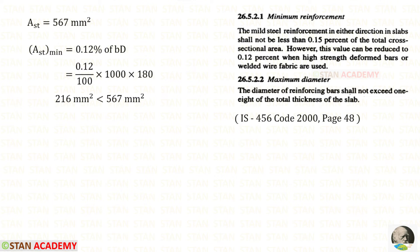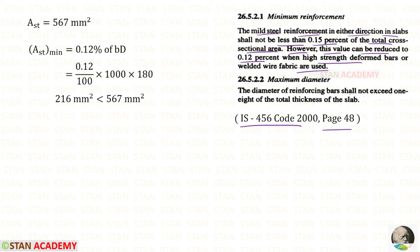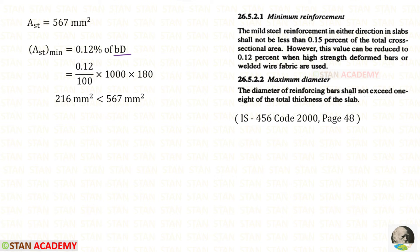Now we check whether the area is enough. From IS 456 page number 48, for high strength deformed bars like Fe 415 the minimum reinforcement is 0.12 percent of the total cross sectional area. The cross sectional area is B times D, keeping breadth as 1000 and overall depth as 180, we get a minimum of 216 millimeter square. Our AST of 567 millimeter square is more than that, so we can proceed with this AST.